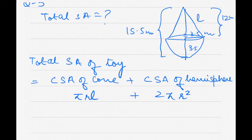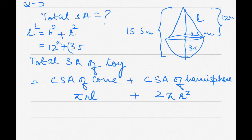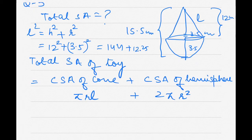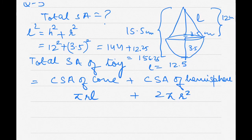So l squared equals 12 squared plus 3.5 squared, which equals 144 plus 12.25, giving l squared equal to 156.25. Taking the square root, l equals 12.5 centimeter.